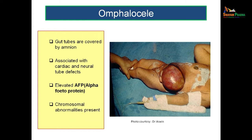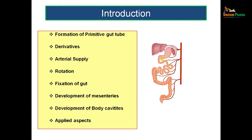These conditions can be prenatally diagnosed because these children will always be suffering from chromosomal abnormalities as well. So if diagnosed early, you can intervene early. In this session, we will be dealing with the formation of the primitive gut tube, the derivatives of the gut tubes, the arterial supply, how the rotation happens, how the organs come to the adult position, the fixation of the gut, the development of mesenteries, the development of the body cavities, and a little bit of applied aspect.